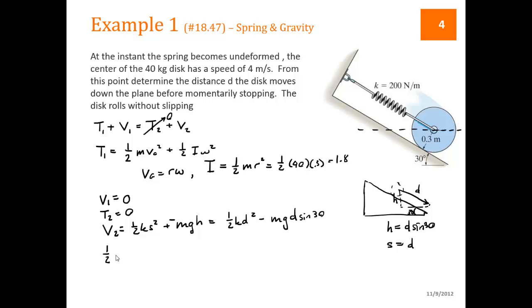We have 1/2 of 40, the mass. We're going to write this in terms of velocity, since that's what's given to us, times the velocity 4 squared, plus 1/2 I, 1.8. This is then, omega is equal to v over r. So omega is 4 divided by 0.3 squared. Plus V1 is 0.